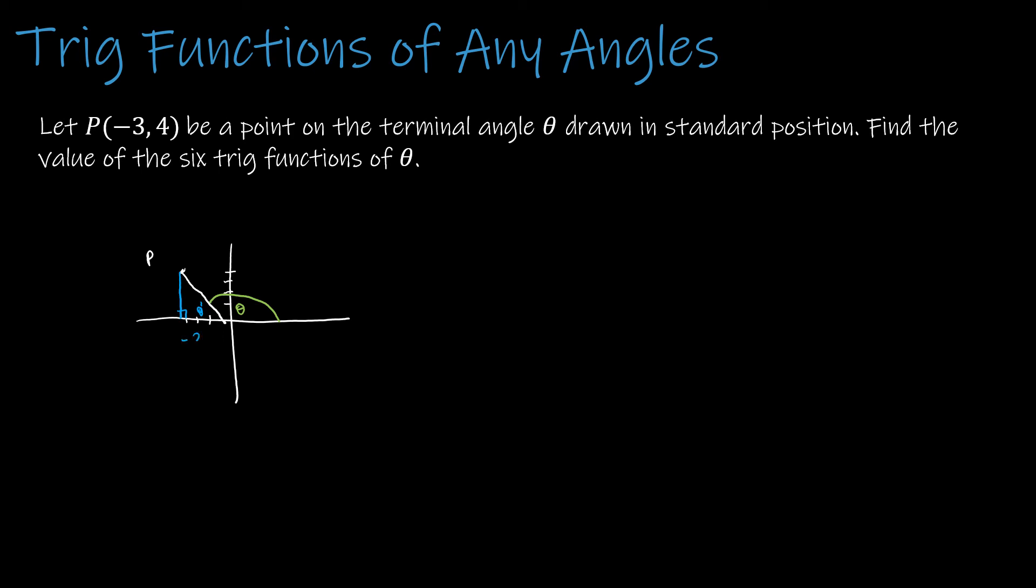This value is -3, that's the x value. The y value is positive 4. I need to find r, and r is always positive. So -3 squared plus 4 squared equals r squared. We have 9 plus 16 equals r squared. 25 is r squared, so r is plus or minus 5, but we only care about the positive value.